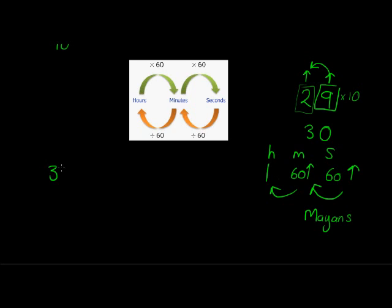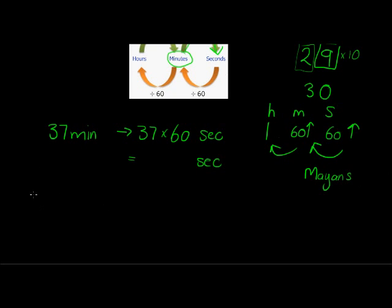In other words, if I have 37 minutes and I want to know how much that is in seconds, I want to go from minutes to seconds, which means I will multiply with 60 once. So 37 times 60. I'm not going to actually do that, you can do that in your calculator much quicker than I'm going to do it right now.